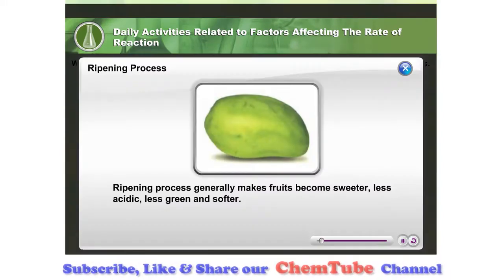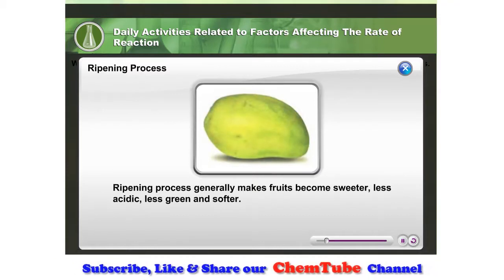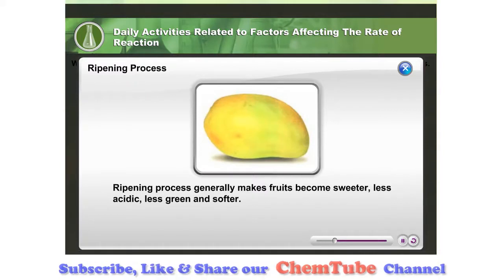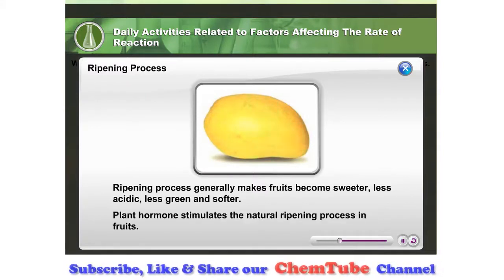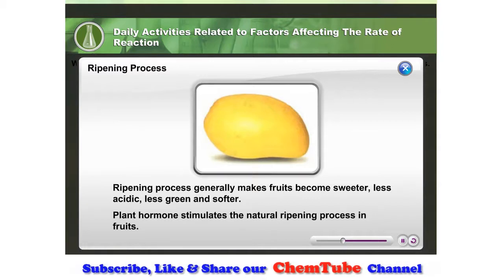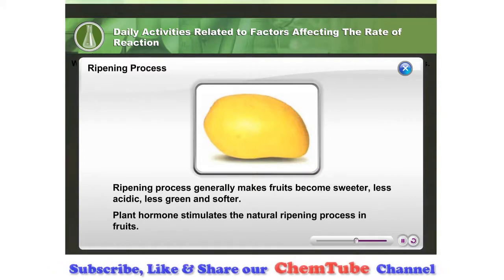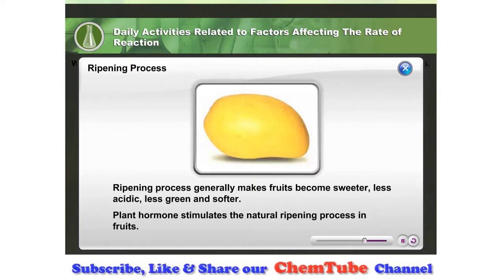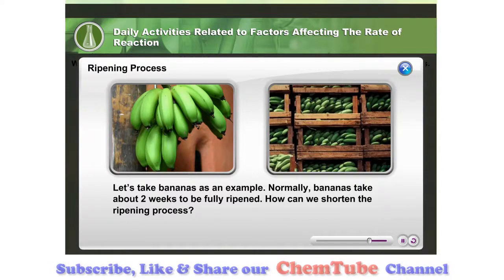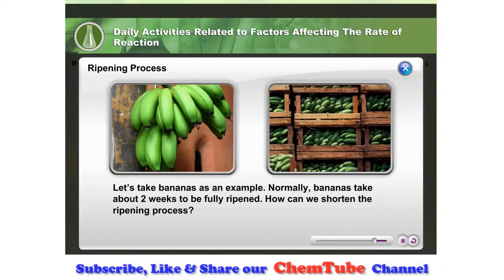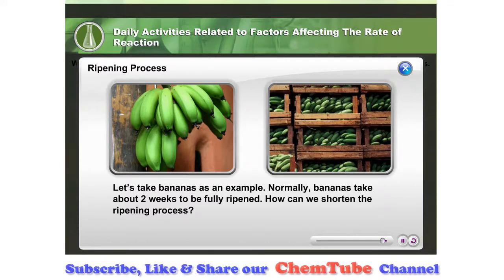Ripening is one of the processes in fruits that makes them more suitable to eat — in general making them sweeter, less acidic, less green, and softer. Naturally, ripening of fruits is influenced by a plant hormone that stimulates the ripening process by increasing certain enzymes in fruits. In the agricultural industry, ripening of fruits is controlled for the purpose of exporting them. For example, bananas normally take about two weeks to be fully ripened. How can we shorten the ripening process?